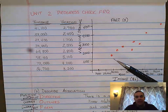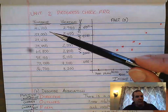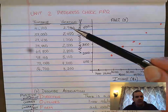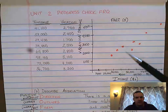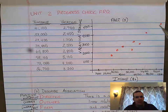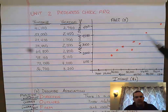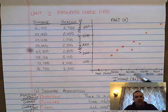I then went ahead and put a dot for every income-vacation pairing. For example, 41,100 and 2,700, and 41,700 and 2,700 right about here. I continued that process for the entire graph — one, two, three, four, five, six, seven, eight dots for the eight data points they gave me. I labeled my axes and scaled my axes.